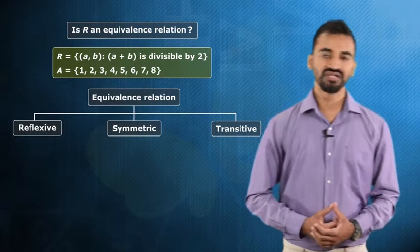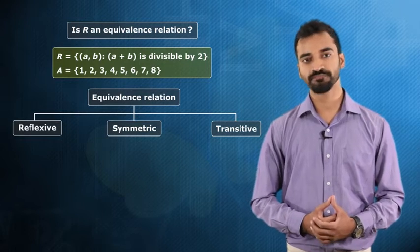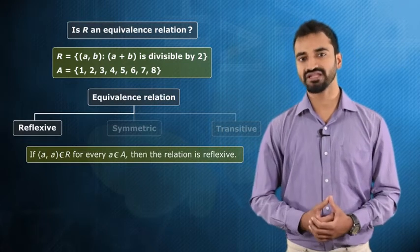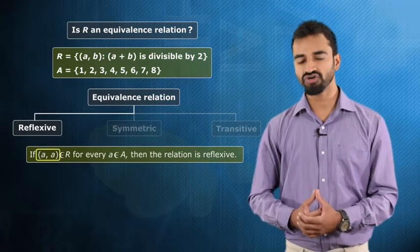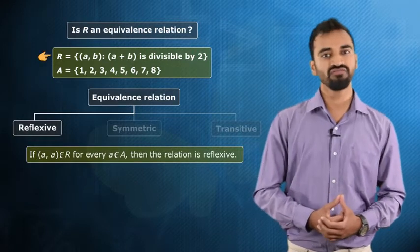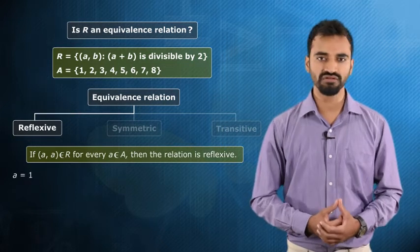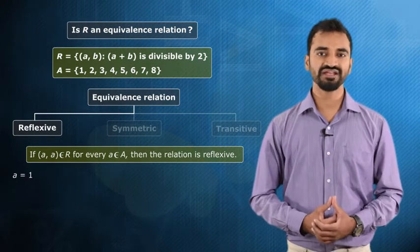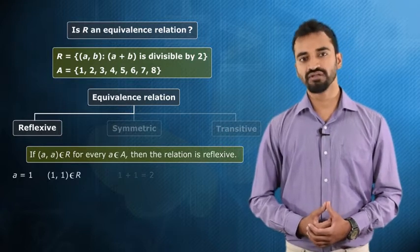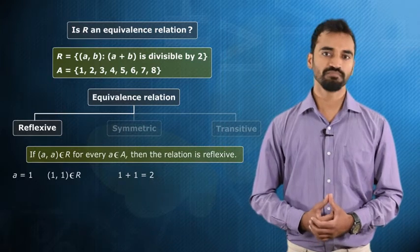Let's find out whether the relation R is reflexive or not. If for every element a belonging to set A, the pair (a, a) belongs to R, then we can say that the relation R is reflexive on set A. Let's take element 1, which belongs to set A. 1 plus 1 is equal to 2, which is divisible by 2, and therefore (1, 1) belongs to R.